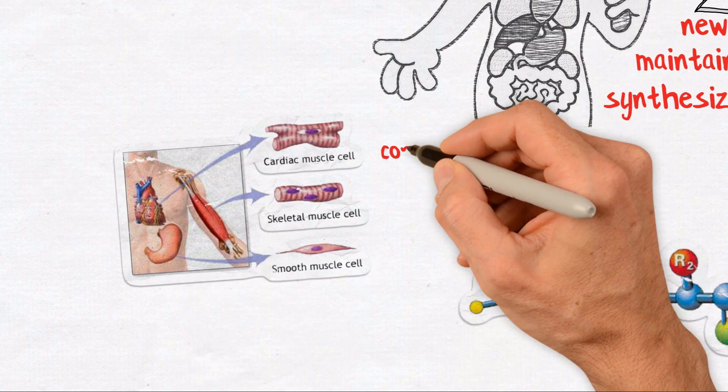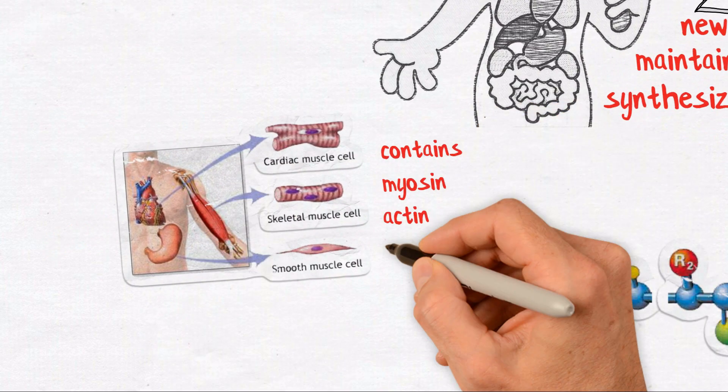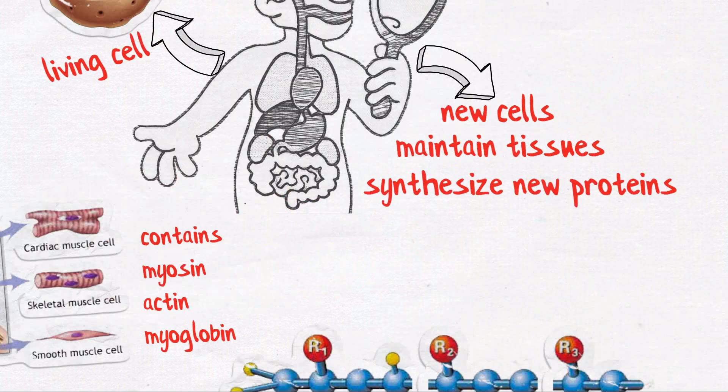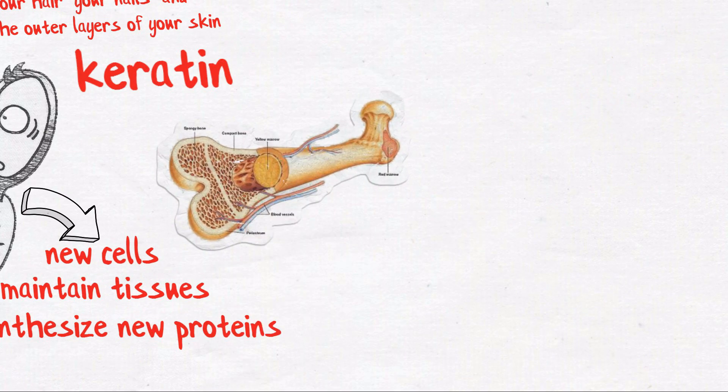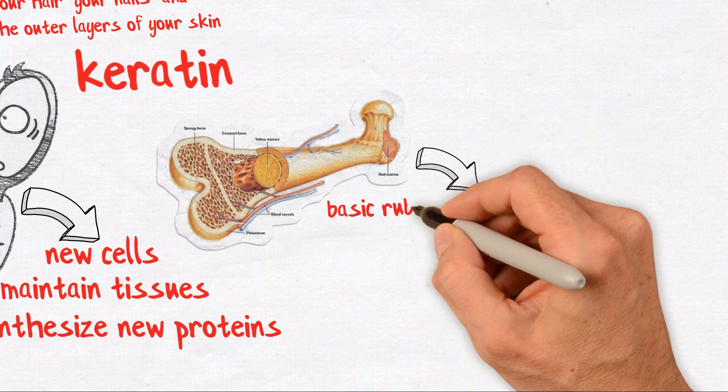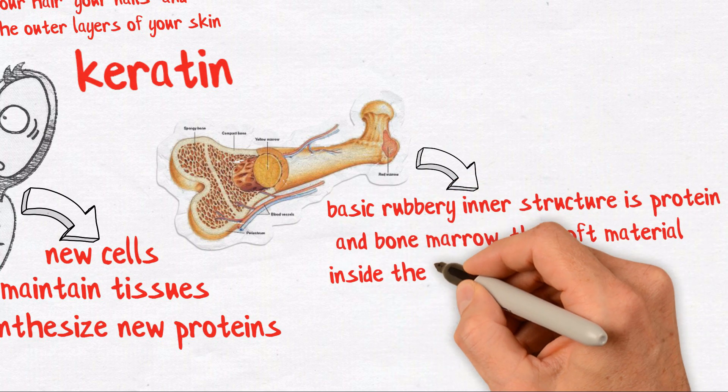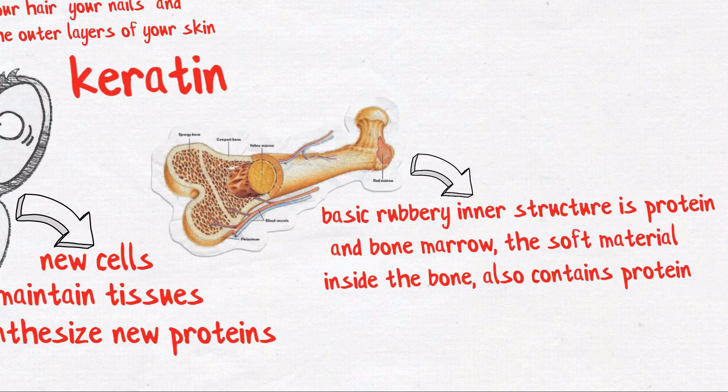Muscle tissue contains myosin, actin, myoglobin, and a number of other proteins. Bone has plenty of protein. The outer part of bone is hardened with minerals such as calcium, but the basic rubbery inner structure is protein, and bone marrow, the soft material inside the bone, also contains protein.